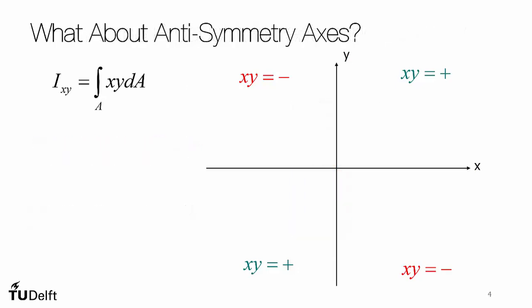What about anti-symmetry axes? Well, it's easy to confuse the fact that we have to balance what's happening in these diagonal quadrants with each other, that the anti-symmetry axes will also produce a product moment of inertia equal to zero. If we take an anti-symmetric section here and rotate it, so that our x and y-axis are the anti-symmetry axes...